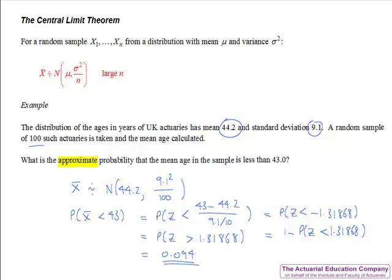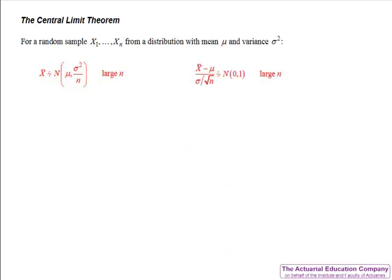Note that when we calculated the probability, we standardised the result by subtracting the mean mu and dividing by the square root of the variance sigma squared over n. So in general, X-bar minus mu divided by sigma over root n follows a standard normal distribution.